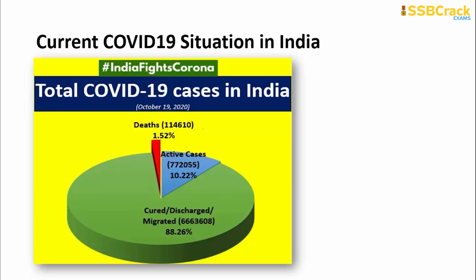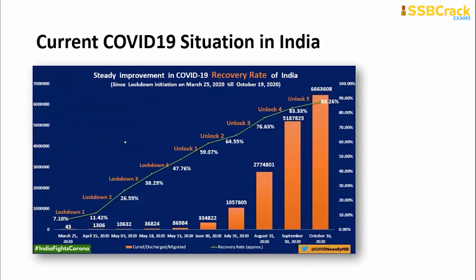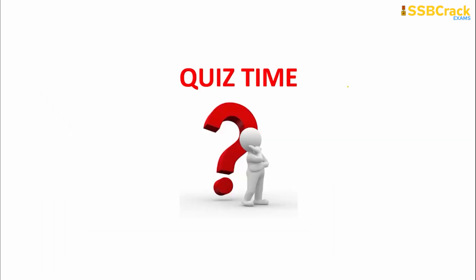Now for the current COVID-19 situation in India as of 19th October: active cases stand at 7,72,055; cured cases at 66,63,608; and deaths have reached 1,14,610. A graph shows steady improvement in India's COVID-19 recovery rate since the lockdown initiated on 25th March 2020 through 19th October 2020.